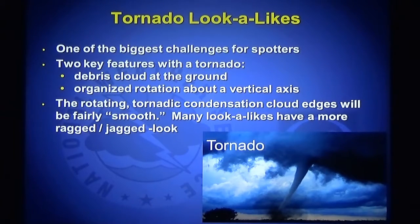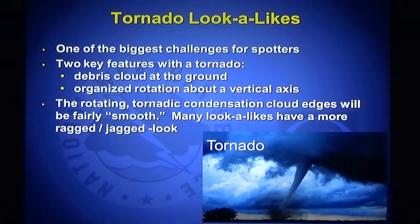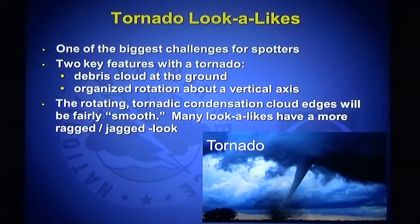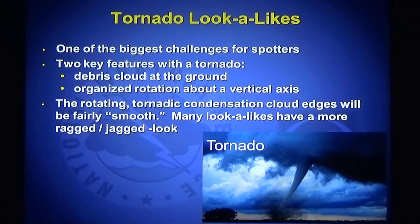I want to talk a little about tornado look-alikes — we have a lot of things that look like tornadoes but aren't. We showed you some fingers that stick out of the shelf cloud that folks mistake for funnel clouds or tornadoes, but in reality those fingers are not spinning, so they're not funnel clouds or tornadoes. One of the biggest challenges for weather spotters is determining if what they're looking at really is a tornado. Two features of a tornado would be a debris cloud near the ground and organized rotation about a vertical axis. The rotating tornadic condensation cloud edges will be fairly smooth, whereas many tornado look-alikes have a more ragged or jagged look to them.